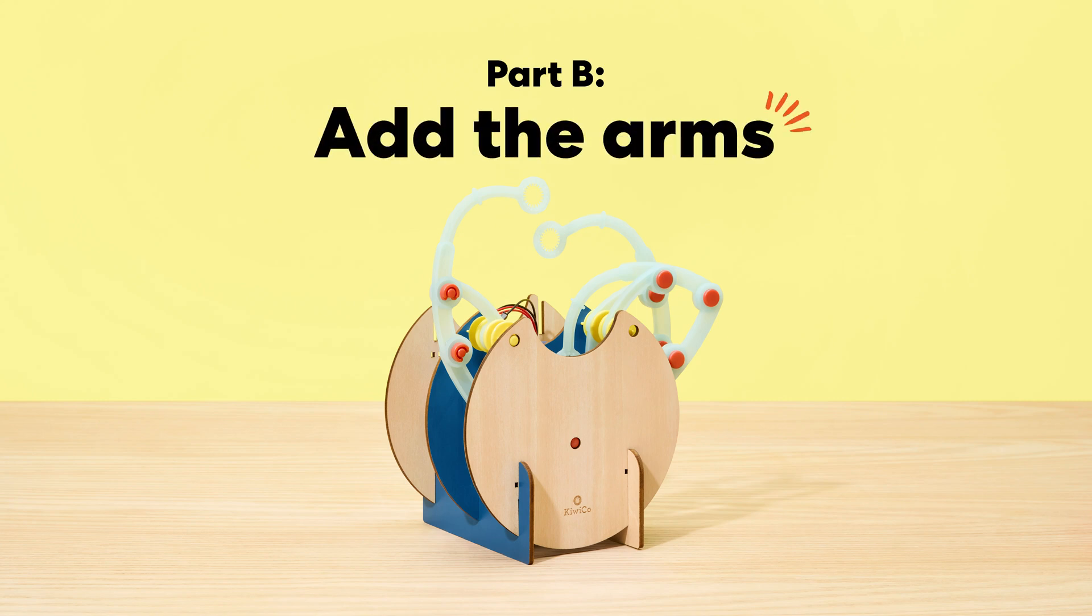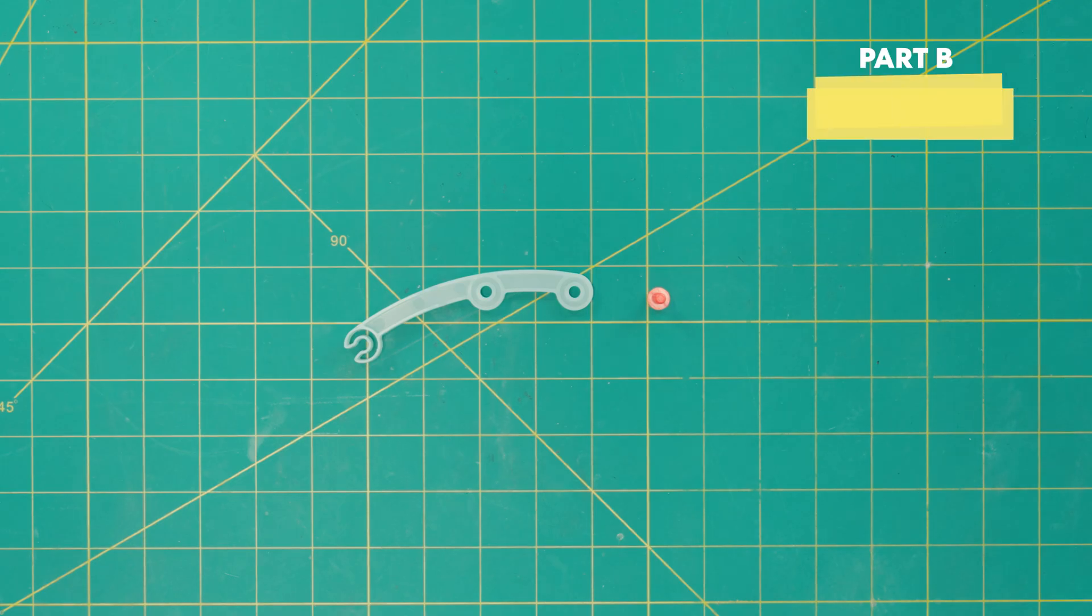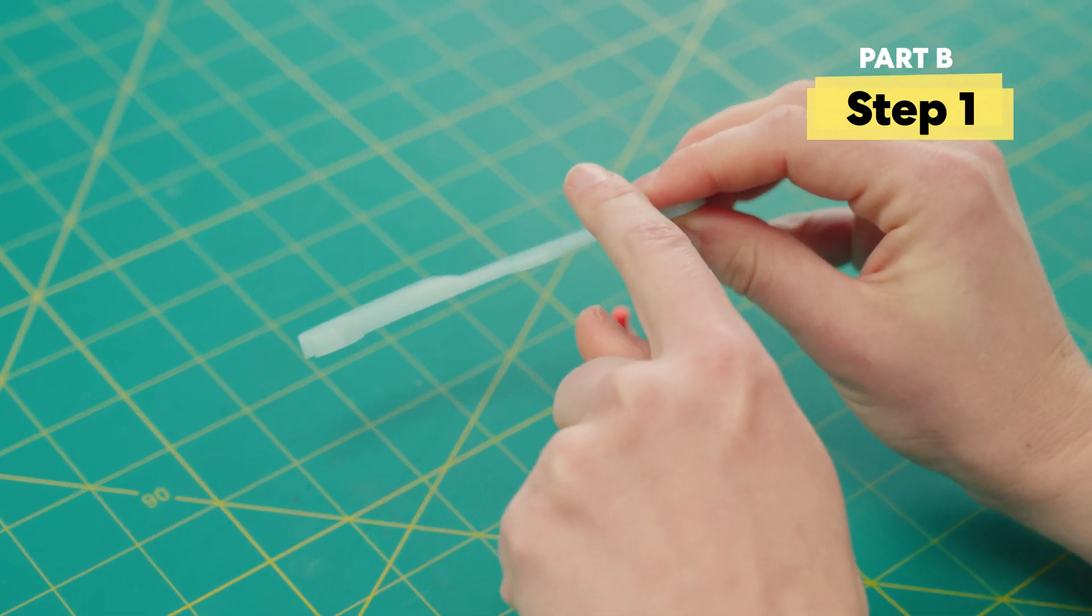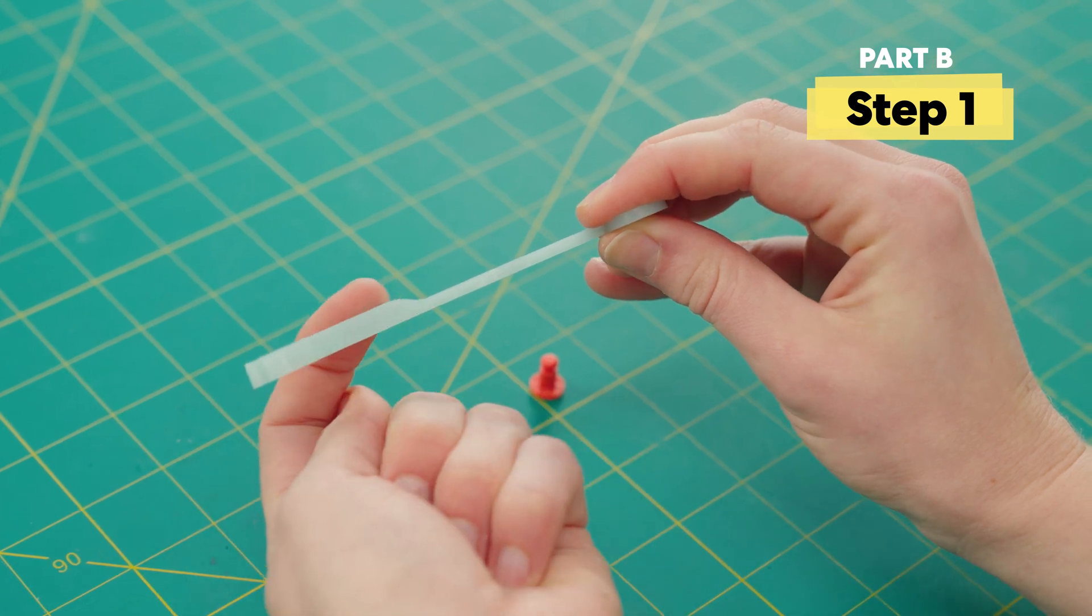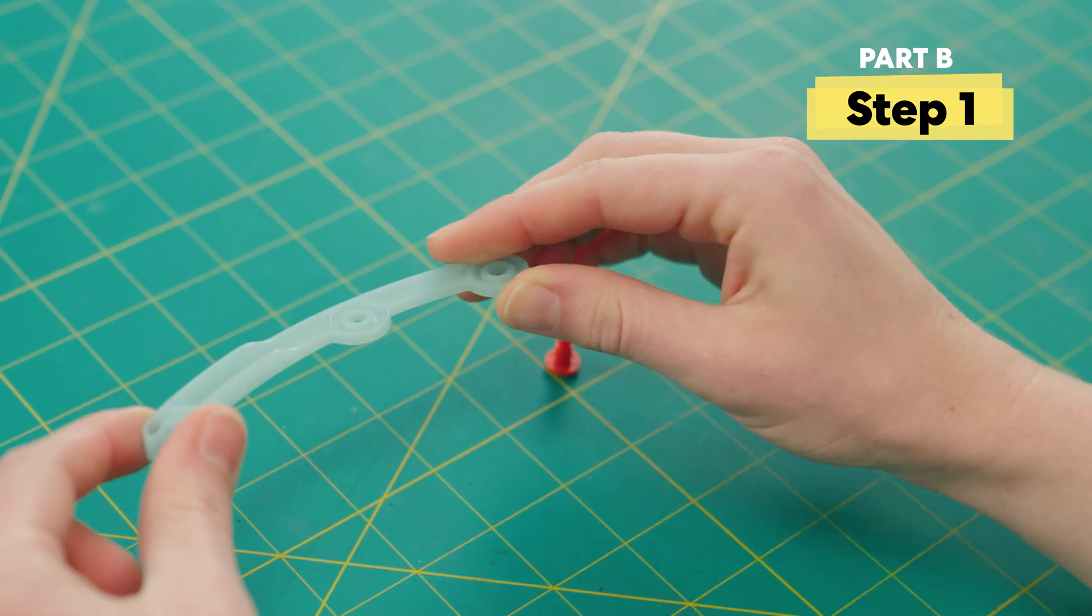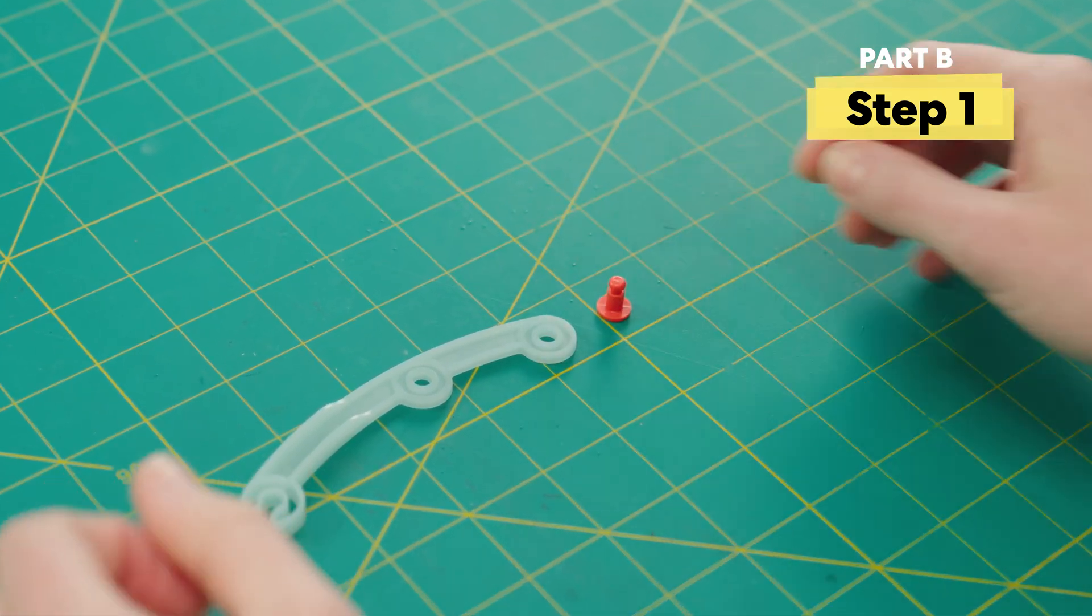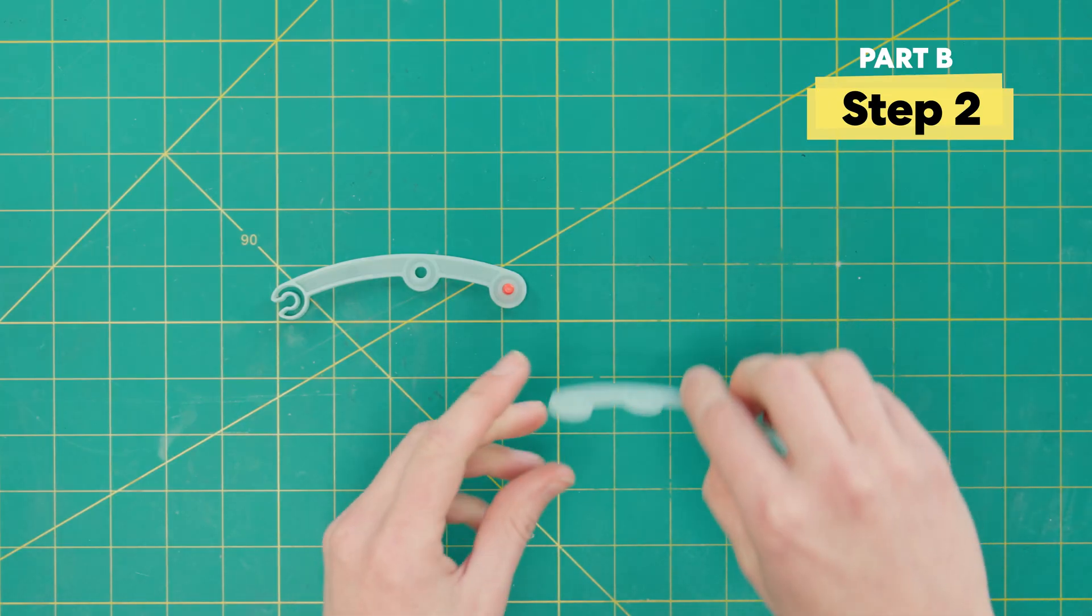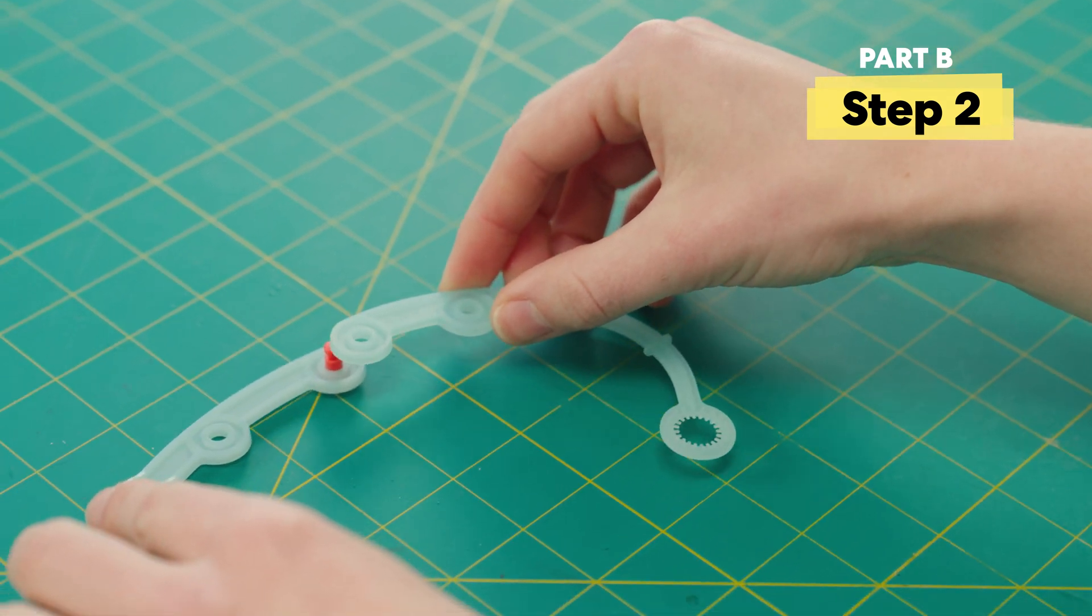Alright, now we're ready for part B, add the arms. It's also really important in this section to make sure that the orientation of everything is in the proper place. So let's double check. This piece has a ridge on one side and is flat on the other side. Make sure that the flat side is down. Then poke a rivet up through the bottom and this last hole and then stack a bubble blower on top. Again, you want the flat side down.